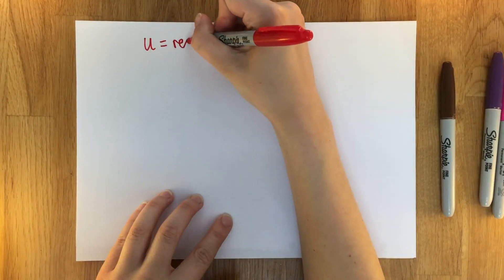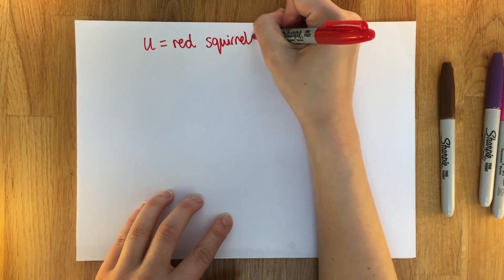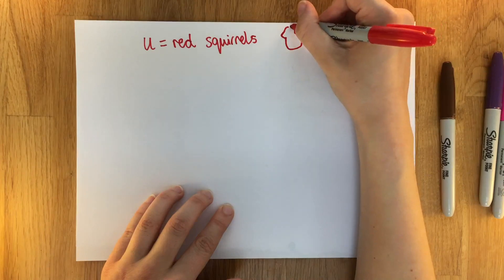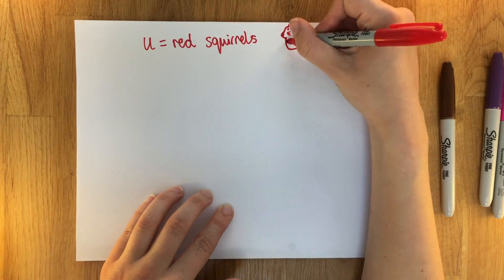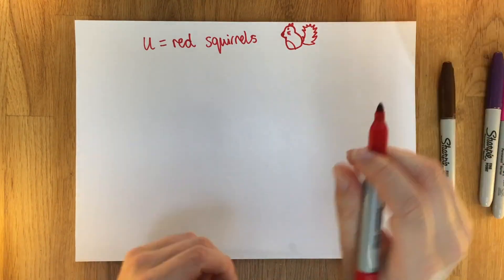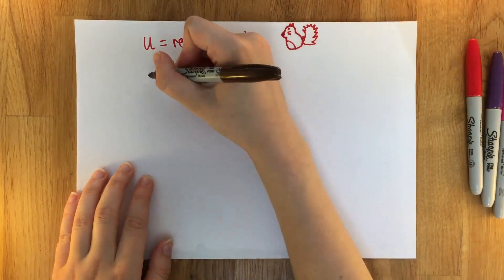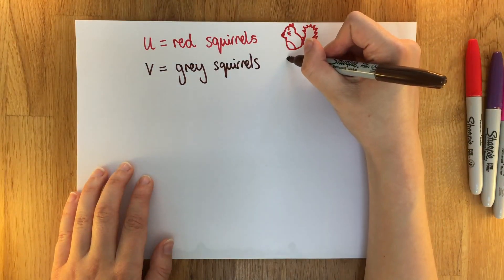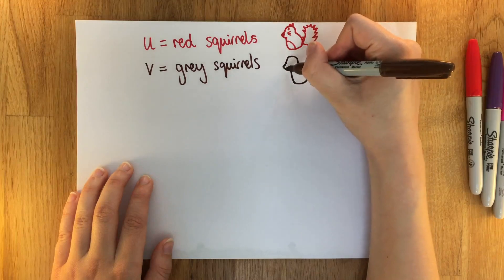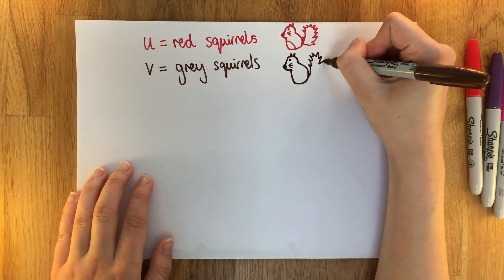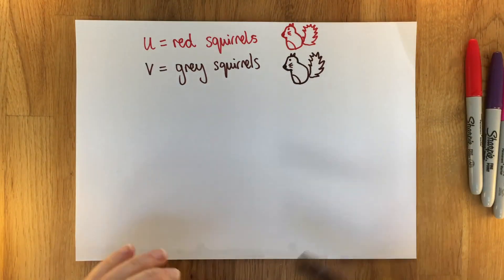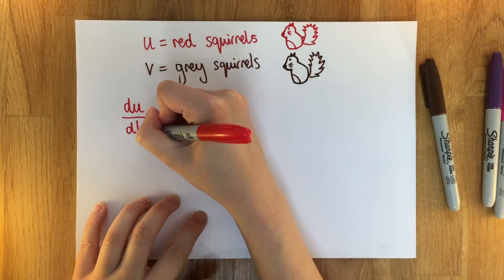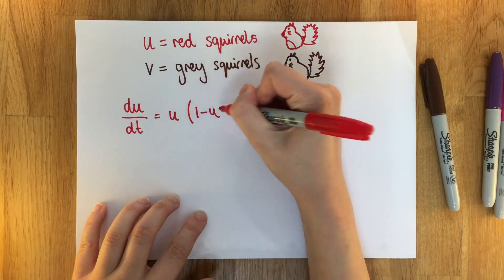We're going to let u represent the red squirrels and we're going to let v represent the grey squirrels. These might seem like kind of weird letters to use, but they're just ones that we commonly use when we're doing population modelling. What we want to be able to do is model how these populations are going to change over time — how u and v both change over time — and we want these both to depend on their own population size and the population size of the other type of squirrel as well.